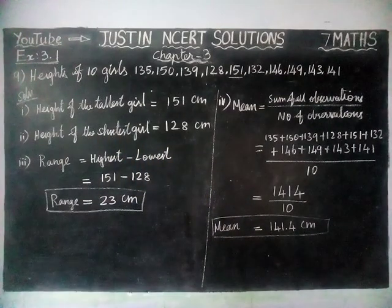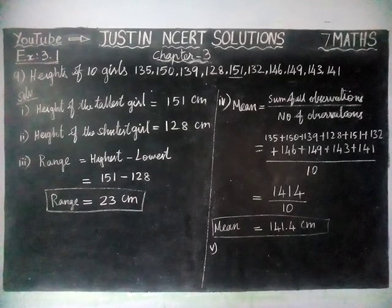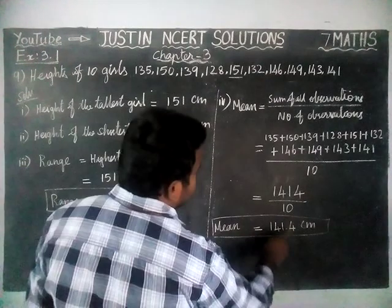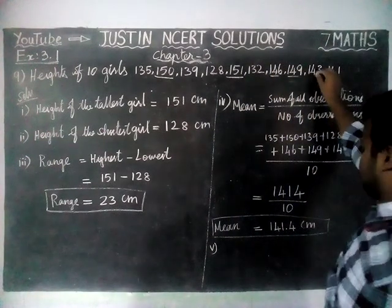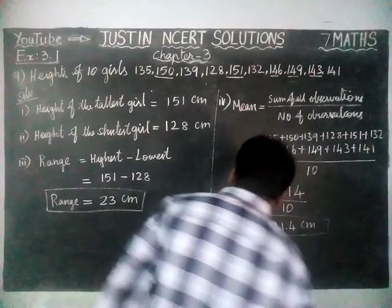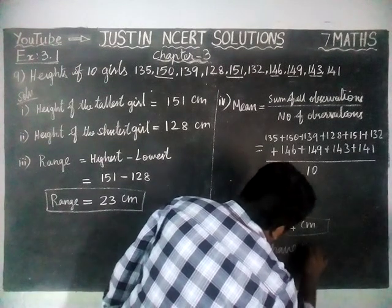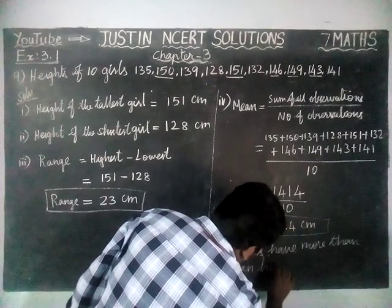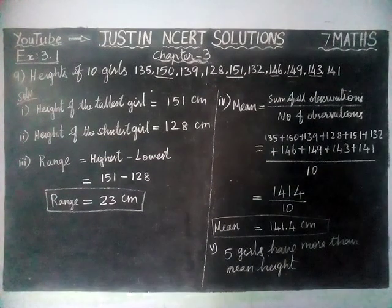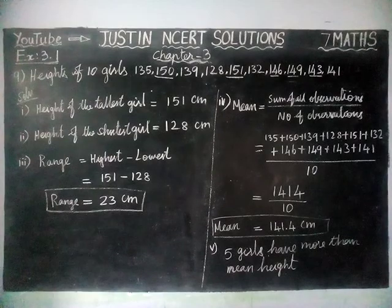Therefore the mean height of the girls is equal to 141.4 centimeter. Now for the fifth question: how many girls have heights more than the mean height? The mean is 141.4, so counting values above it — 150, 151, 146, 149, 143 — that is 1, 2, 3, 4, and 5. So totally 5 girls have more than the mean height. That's all students — kindly give your suggestions in the comments box, share this video with your friends, and subscribe to our channel. Thank you.